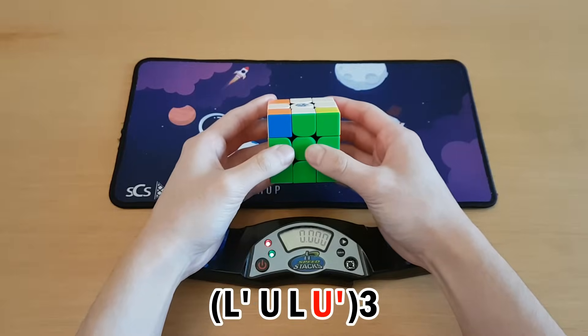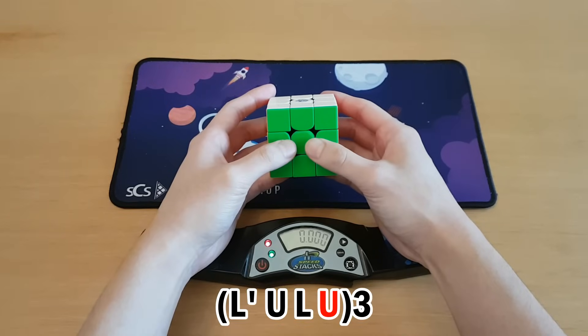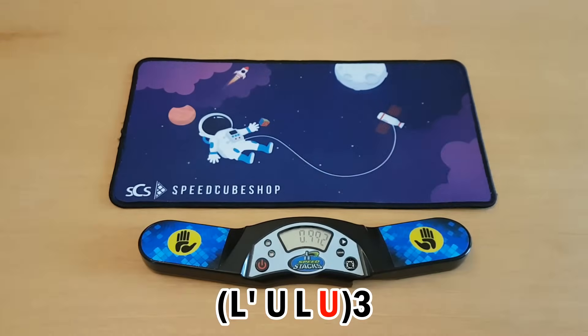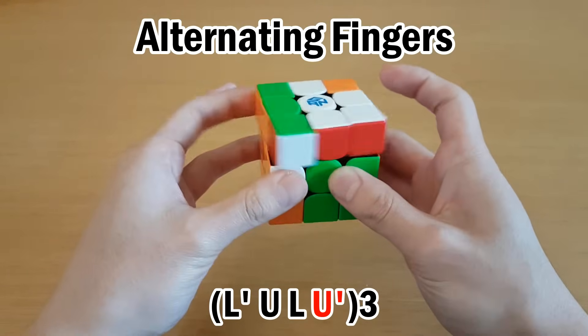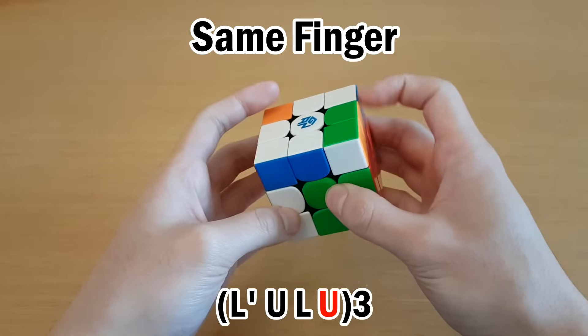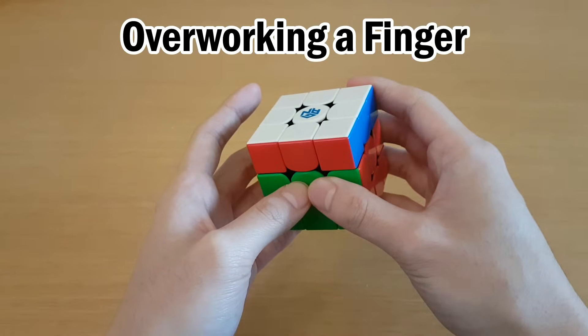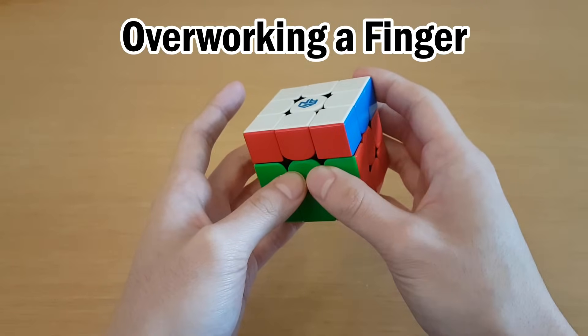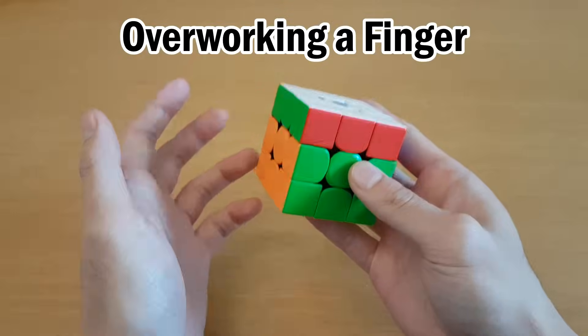Next is the concept of overworking. Take a look at these two 12-move sequences. Now, we'll just change that U' to a U, and try again. In the first example, I alternated right hand and left hand for the U-turns. In the second example, it was always right hand, which means I have to reset every single time. But if I have to use the same finger again so quickly that I can't make it back without wasting time, then that is overworking a finger, and that takes extra time.